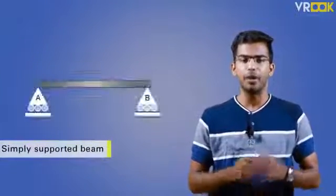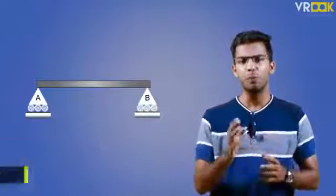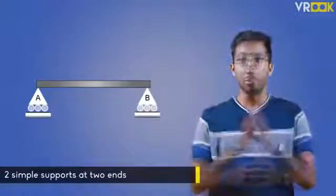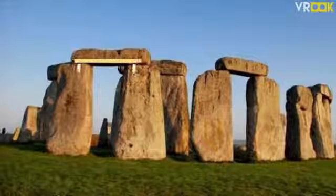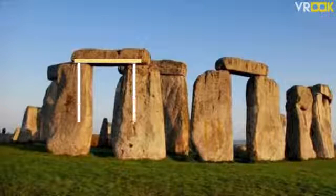Now let's look at simply supported beam. It is a beam with two simple supports at two ends. For example, you can consider the Stonehenge where the beam is simply supported by two supports.